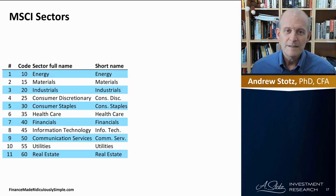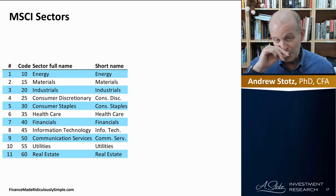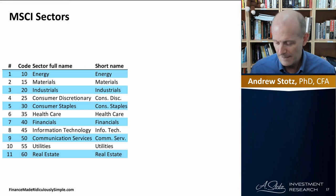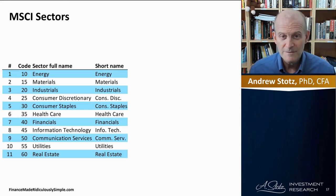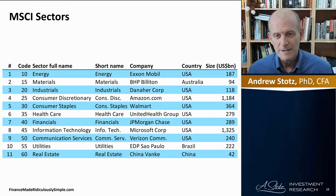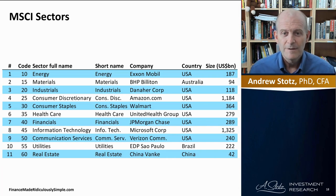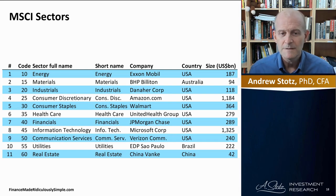Let's look at the sectors and breakdowns. We call it GICS, but a lot of times we call it MSCI sectors. Here we have 11 sectors, from energy all the way down to real estate. Some of the big companies include Amazon in consumer discretionary, Walmart in consumer staples, UnitedHealth in healthcare, and JP Morgan in financials.